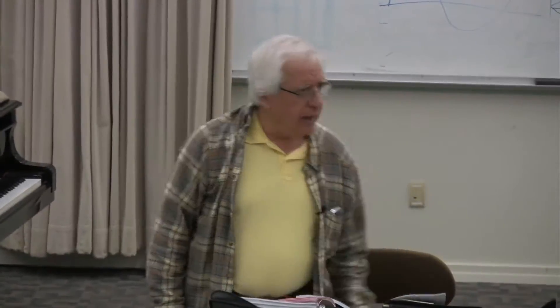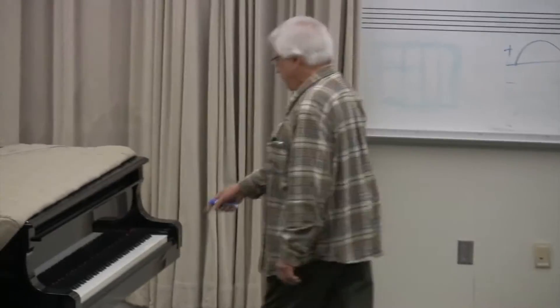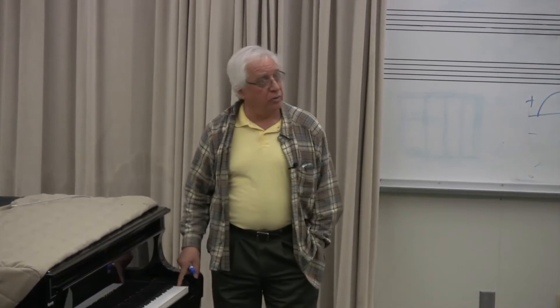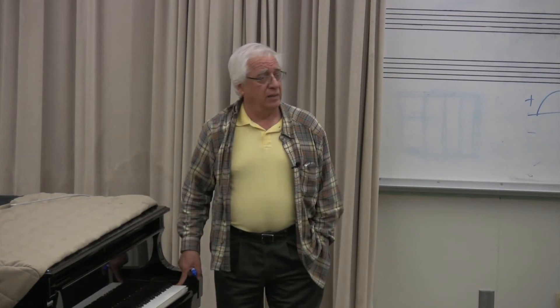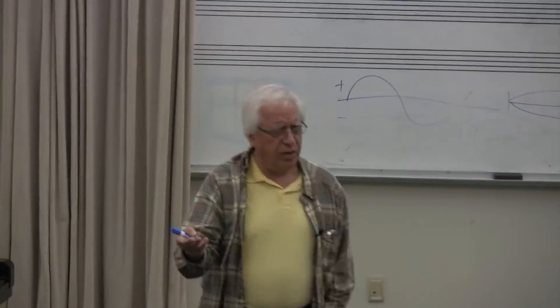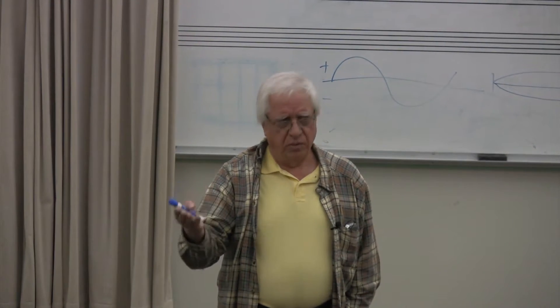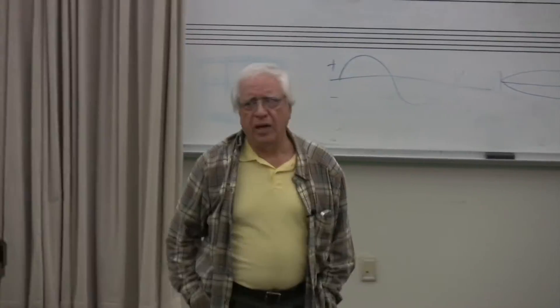We hear up to 20,000 cycles per second, and this piano only goes up to 4,186 — which means all the instruments of the orchestra pretty much end right here. That's pretty high. But what is all this stuff above that which we hear? 10,000 cycles? 20,000? Overtones. Harmonics. They are harmonics.